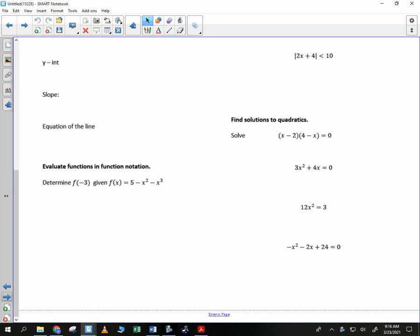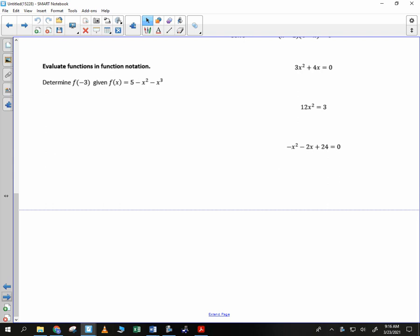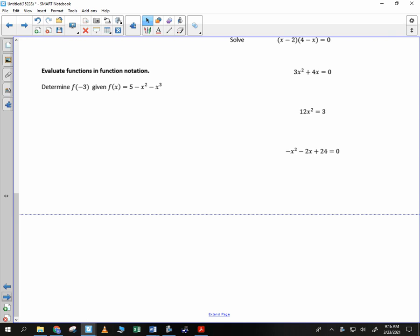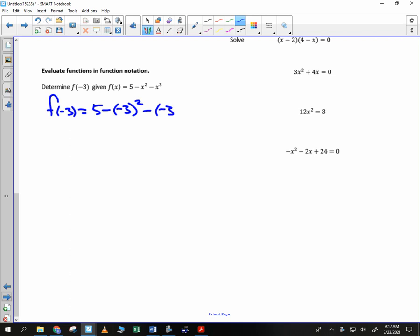Okay, yesterday we left off here. I know that for some of you, a lot of what we saw yesterday was review, and we're going to continue on with that. Hopefully today you'll see some things that are new. You will see a question on the ACT regarding function notation. Determine f of negative 3, given f of x is 5 minus x squared minus x cubed. You just plug in negative 3 for x, so you should get f of negative 3 is 5 minus that negative 3 quantity squared minus negative 3 quantity cubed.